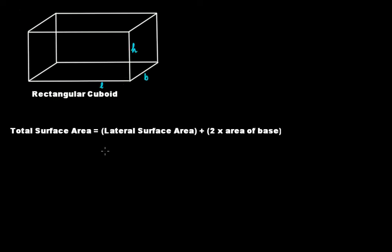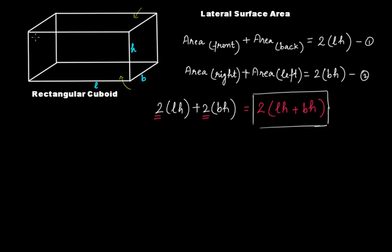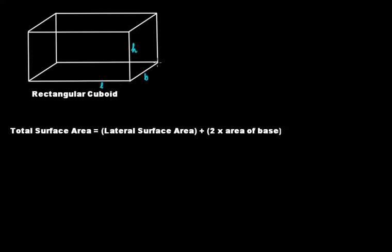Can we say that total surface area equals lateral surface area plus 2 times the area of the base? Yes. Lateral surface area covers the front, back, right, and left faces. The two remaining faces are the bottom and the top, which are identical. So 2 times the area of the base accounts for both. Therefore: TSA = LSA + 2 × area of base. That makes sense.